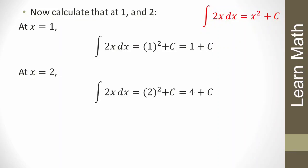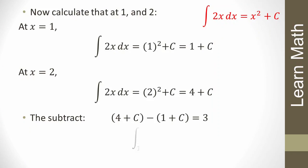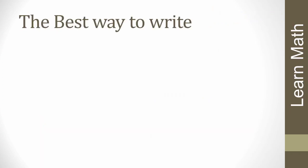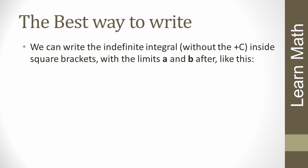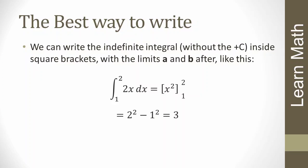Now subtract both results at x = 1 and x = 2: we get (4 + c) − (1 + c) = 3. The c's cancel, giving 4 − 1 = 3. So the definite integral from 1 to 2 of 2x equals 3. We can write the indefinite integral without the + c inside square brackets with limits a and b: ∫₁² 2x dx = [x²]₁² = 2² − 1² = 4 − 1 = 3.